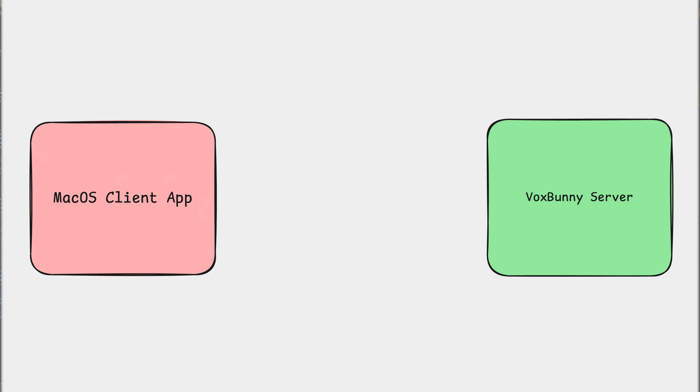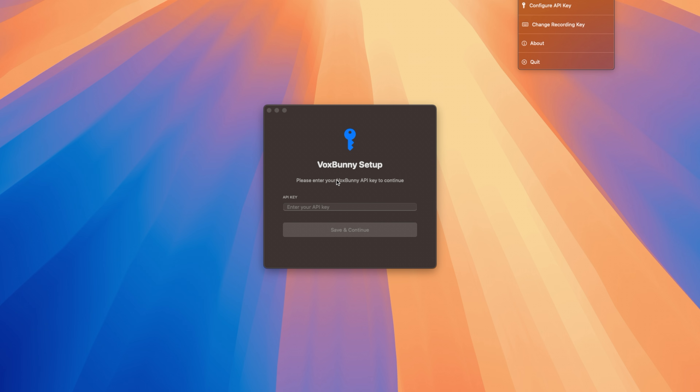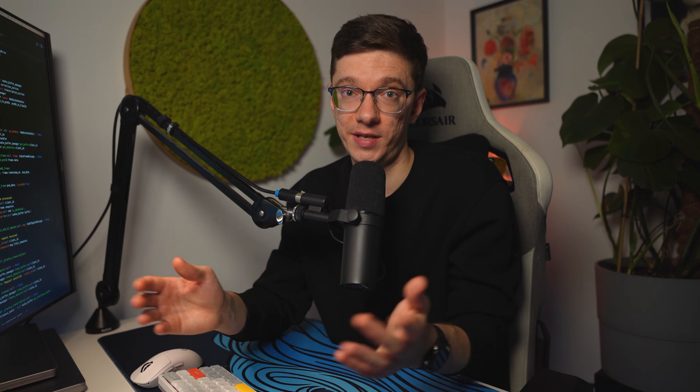Now about security. Even though this app works inside a local network, I still added simple API key validation on the server side just in case. When I launch the client app on another device for the first time, it asks me to enter the API key. I enter that key, save it, and then I can use Vox Bunny.